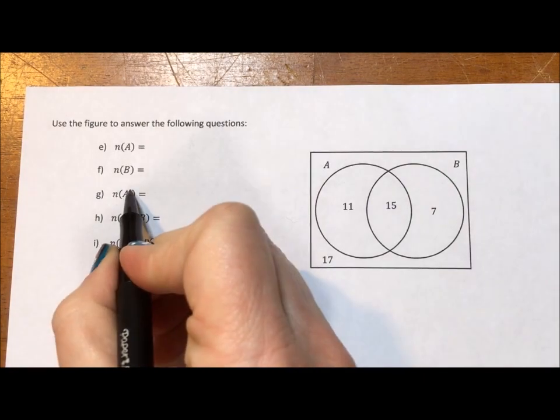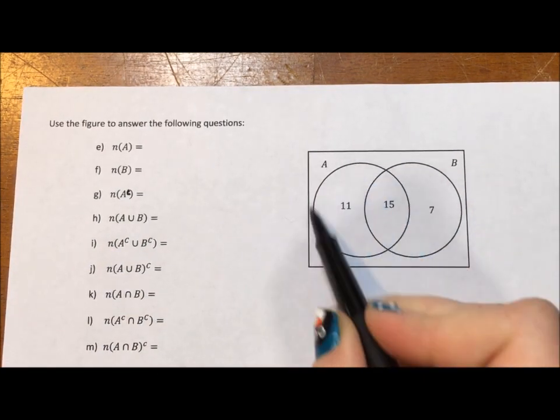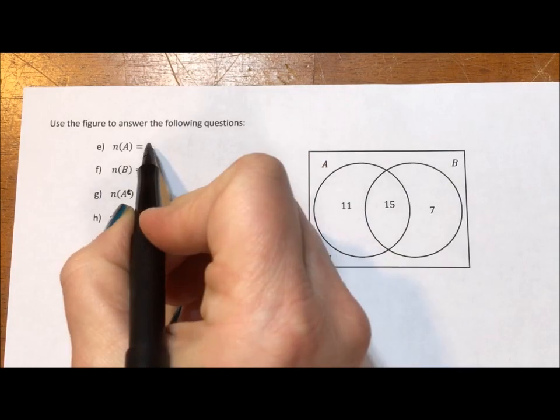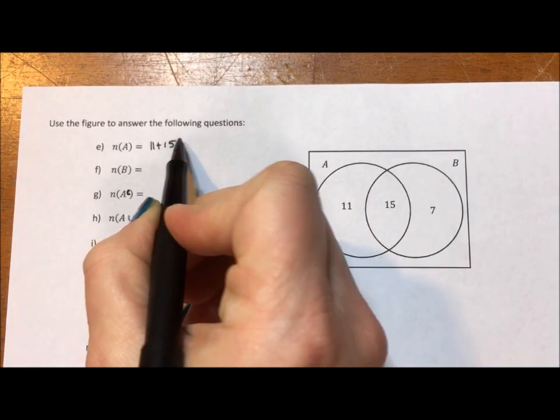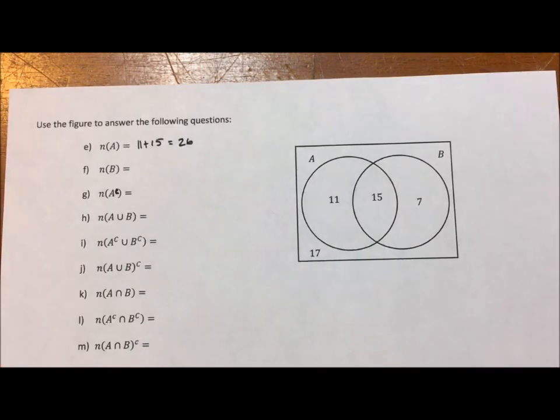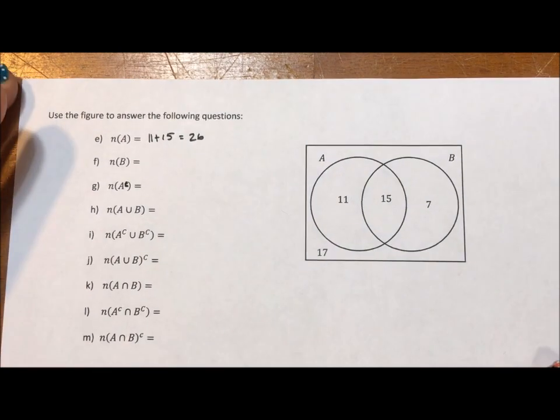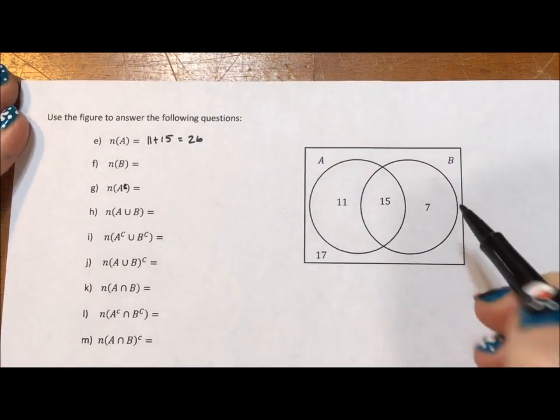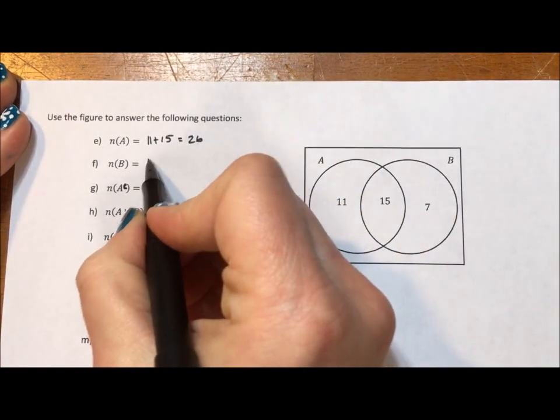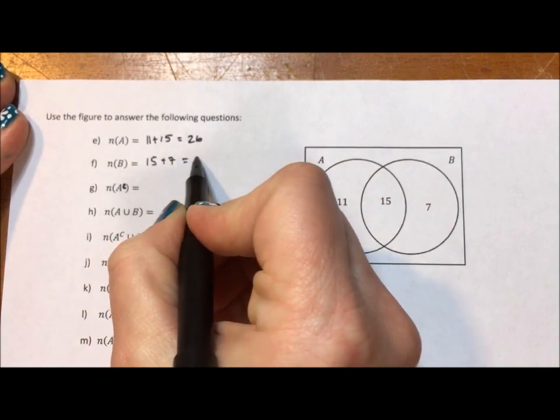So the number of elements in A, A is made up of two parts, so it's going to be 11 plus 15, which is 26. The number of elements that are in B, that's these two parts, that's 15 plus 7, which is 22.